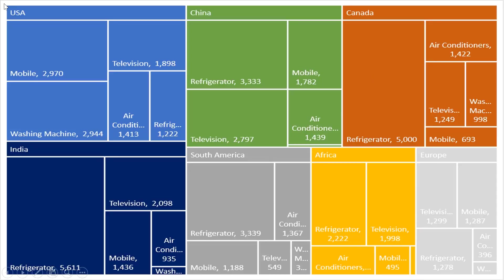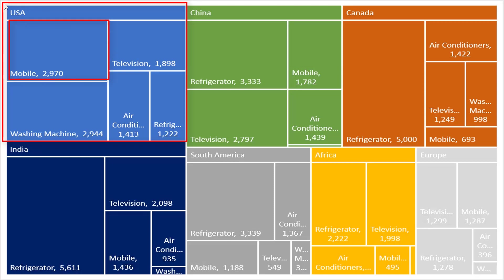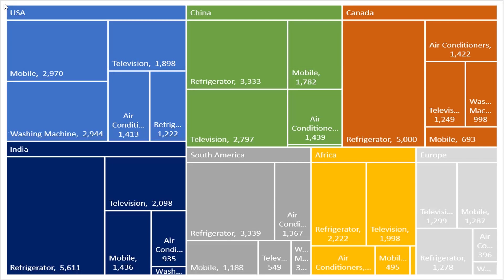A tree map chart is a hierarchical chart. The top categories in the data set are represented by large rectangles having different colors. The subcategories within the data are shown in smaller rectangles. Their size represents the contribution to the larger rectangle size. This chart is useful when you have multiple levels of segmentation.